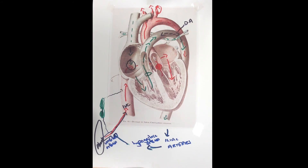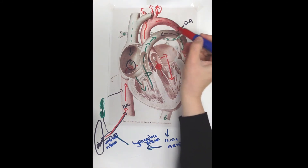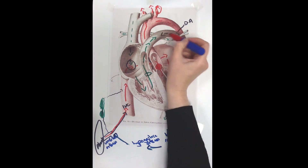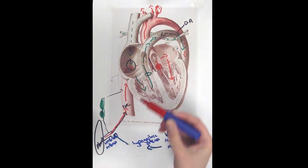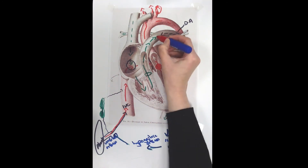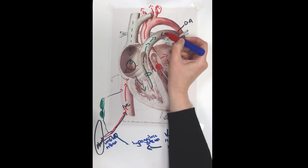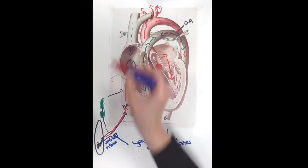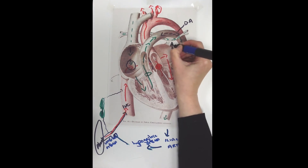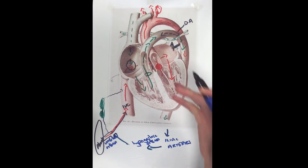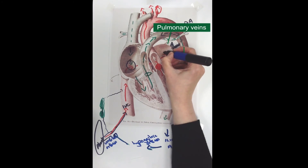With the first breath, the lungs expand. The vascular resistance of their vessels falls and blood supply is much increased. The blood that was going along the ductus arteriosus now gets drawn into the lungs instead, flowing along the pulmonary arteries. As a result, there is an increased pressure of blood returning from the pulmonary veins into the left atrium.